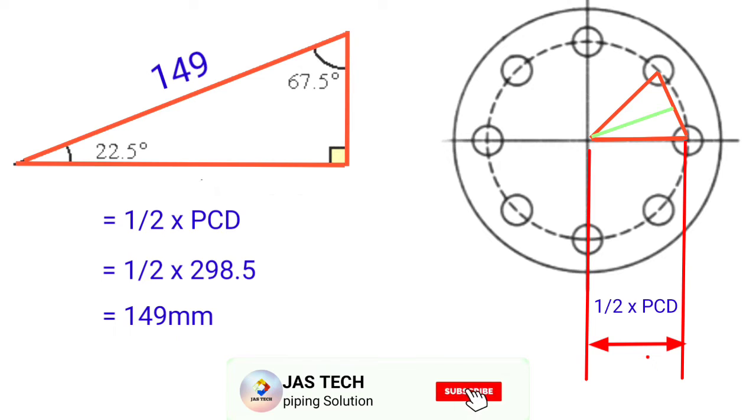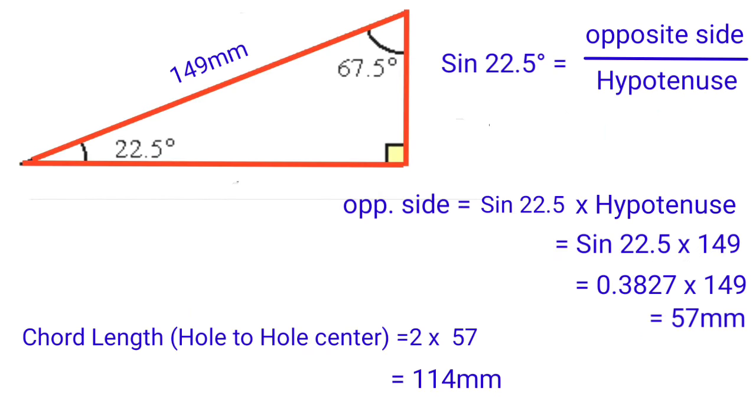Our sample triangle: sin 22.5 degrees equals opposite side by hypotenuse. We need the opposite side. So opposite side equals sin 22.5 into hypotenuse. Sin 22.5 value is 0.3827.